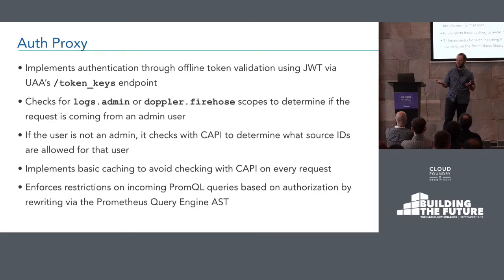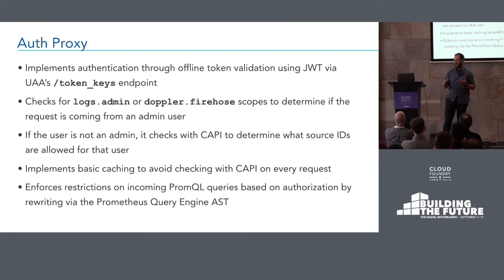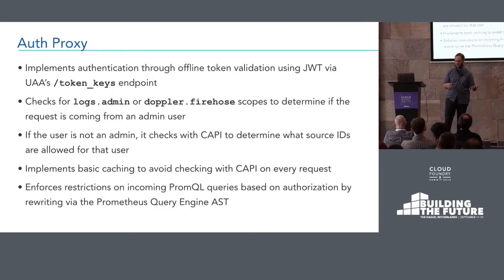We check for two different scopes: logs.admin and doppler.firehose. If your user has either of those, you'll be granted admin-level access to the auth proxy — any filtering or source ID limitations will be dropped, so you can basically query anything and your PromQL queries should behave like normal PromQL queries. For non-admin users, we use the Prometheus query engine abstract syntax tree to actually break down the queries, look at what you're requesting, and if necessary add labels to make sure you're not requesting data you're not allowed to. If you're looking for something you shouldn't be able to see, we'll reject the query. This works because we're using as much of the PromQL engine as possible, which lets us process queries just like Prometheus would.